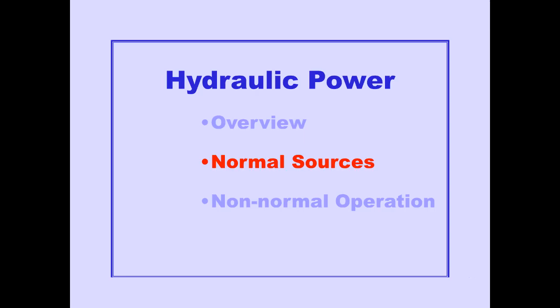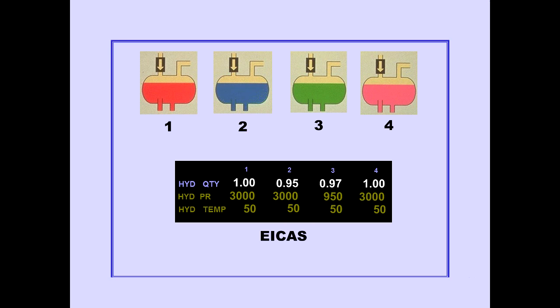We will now discuss the normal sources of hydraulic power. Each system has its own independent reservoir. The quantity in each reservoir is indicated on the ICAST status display. A value of 1.00 is the normal service level. The value displayed is a percentage of full.